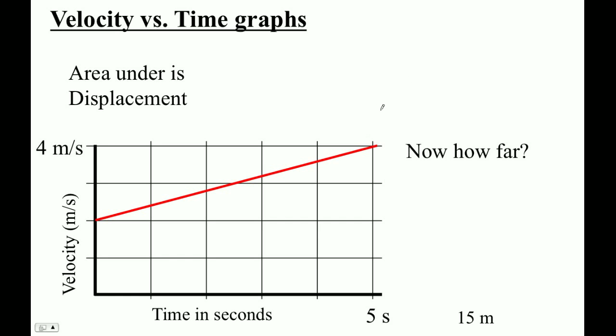This is the exciting second thing you can do with a velocity versus time graph: you can find the area under. The area under a graph is actually the displacement.